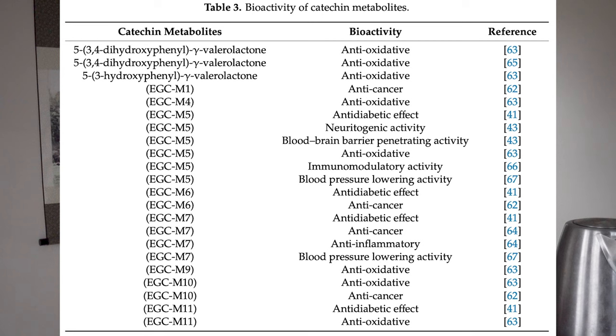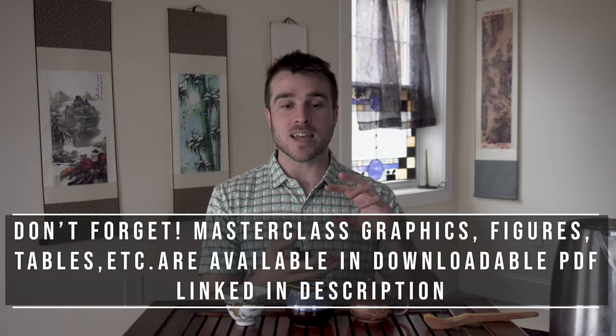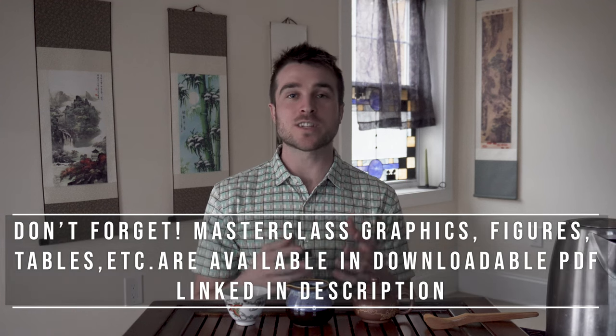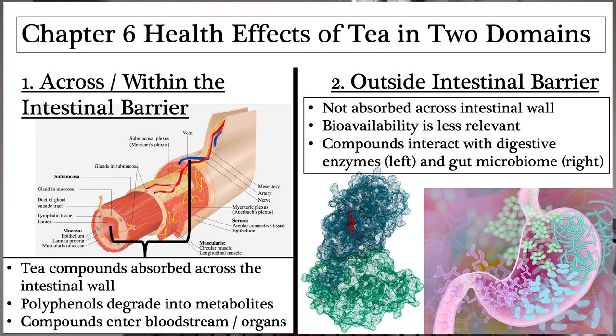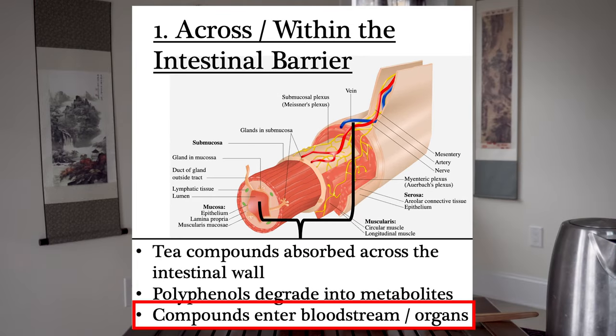This table shows on the left all the different tea catechin metabolites — the breakdown products of EGCG. In the middle you have the various bioactive functions they've been shown to have, and on the right the references — the original research showing that these catechin metabolites actually have these functions. You can see that when you break these tea catechins down, the metabolites are still extremely bioactive and doing basically the same functions in the body as the parent molecule. Understanding these metabolites is really the key to researching tea's effects on health.